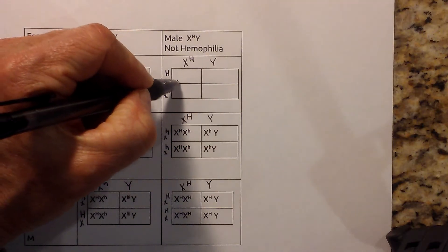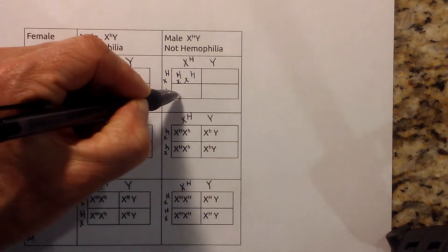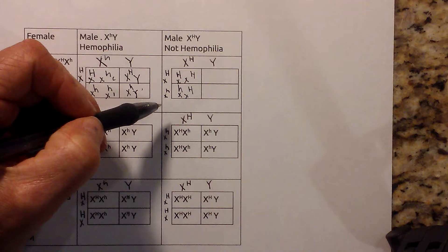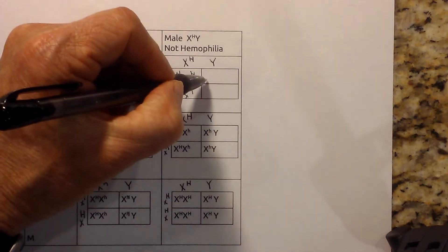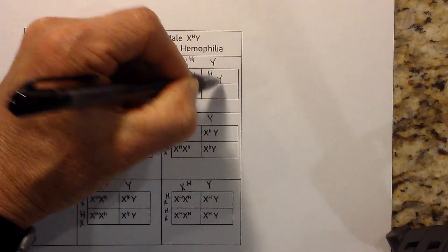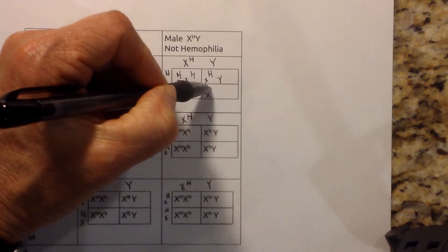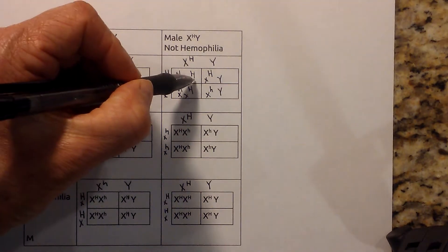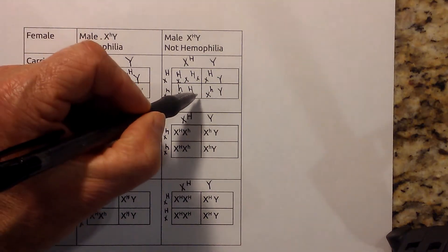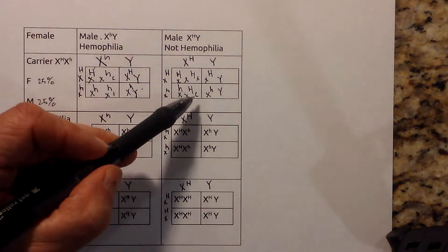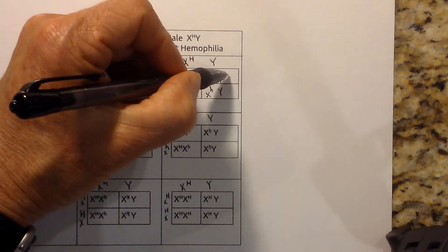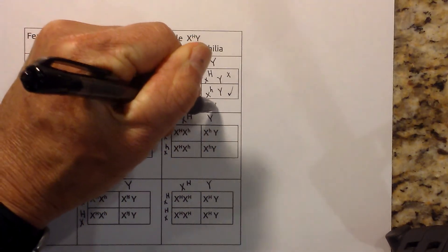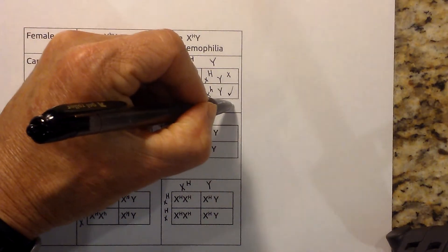Now for the second Punnett square, filling it in: XX capital-capital, XX lowercase-capital for the females, and X capital Y and X lowercase Y for the males. You can write the H in front, but there's no universal rule for that. In this example, the female will not have the disease — she'll be a carrier — and the male will not have it, but this male will have hemophilia. So there's a 25% chance the male gets it, but 0% chance for the female.